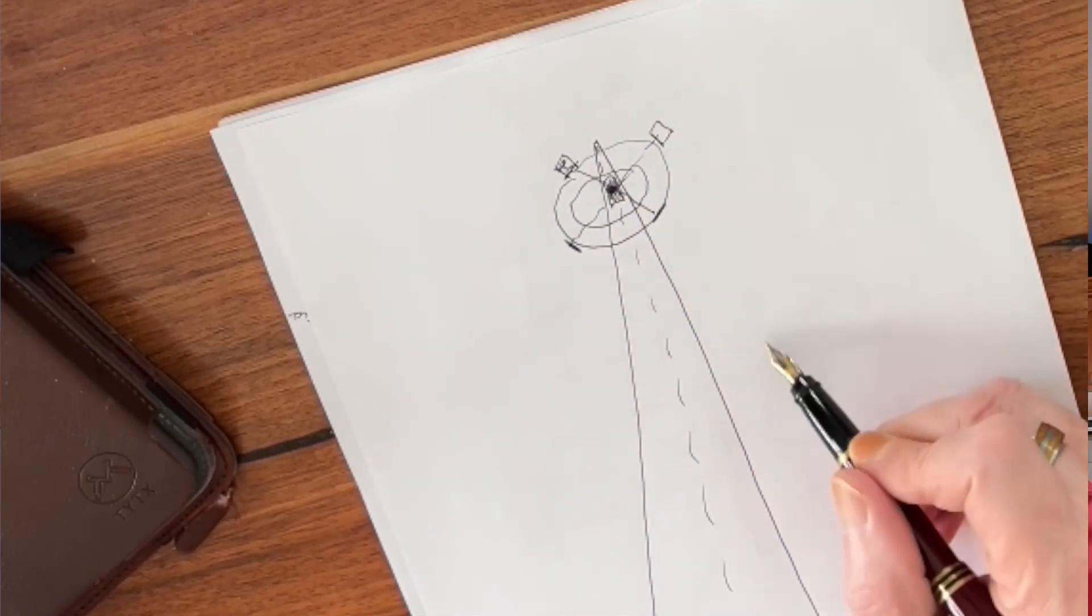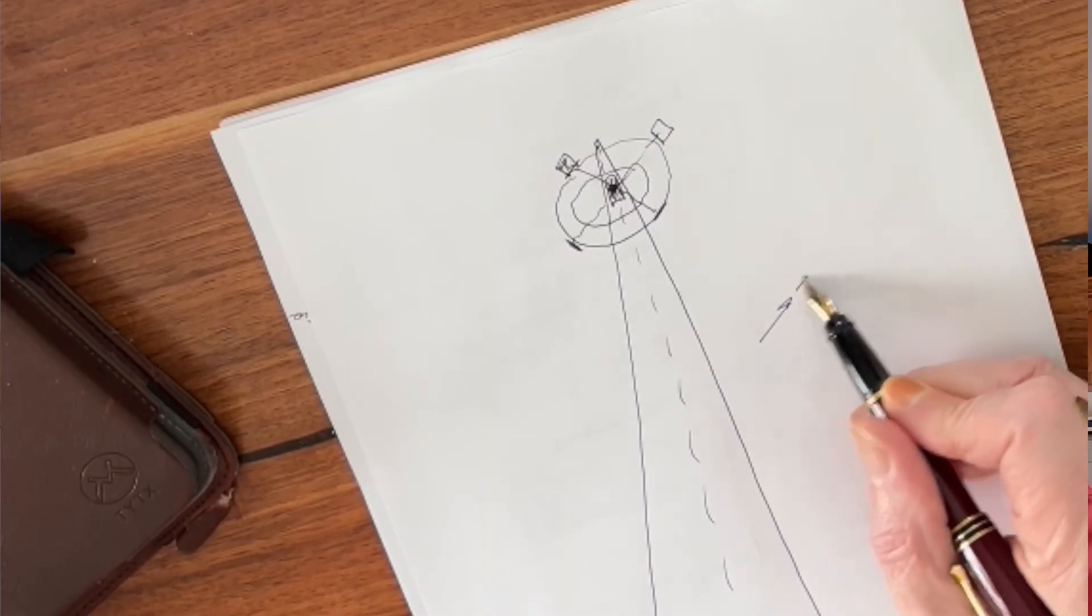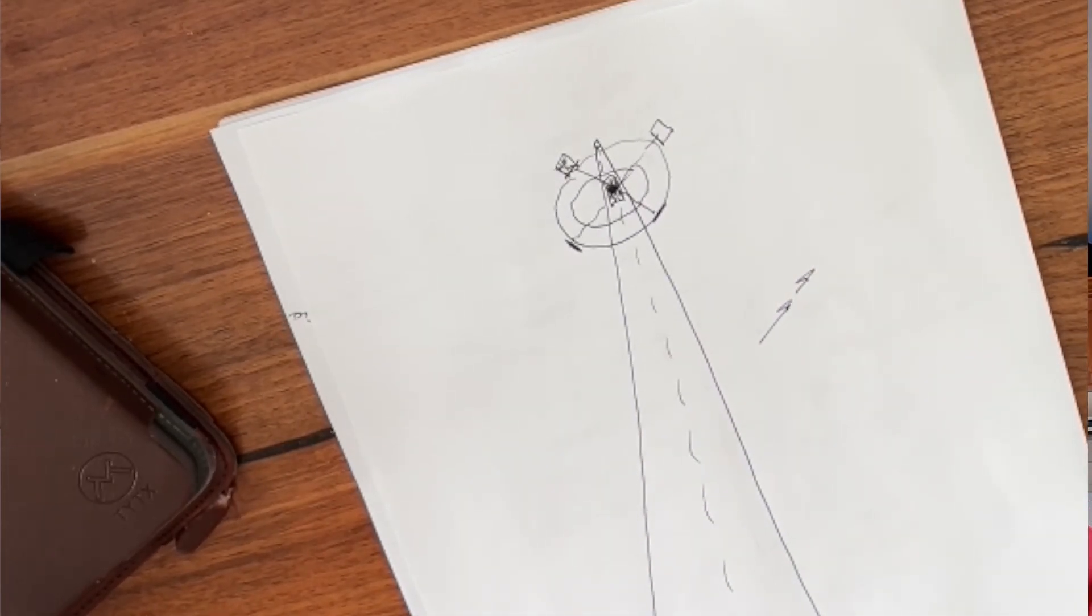And what that does is whatever direction the pendulum's going, it just gives it a little extra boost in that direction. The purpose of this is to try and put enough energy into the pendulum to overcome the loss due to air resistance. And there's some good math that you can do to figure out what this is, but basically, you're also going to end up kind of tuning it by hand a little bit to make sure that it has just the right amount of force.